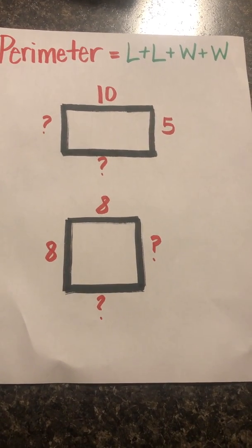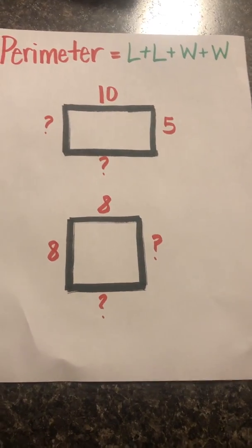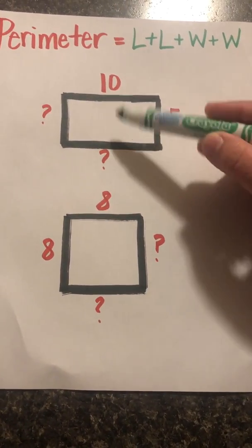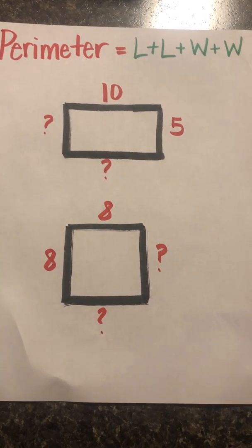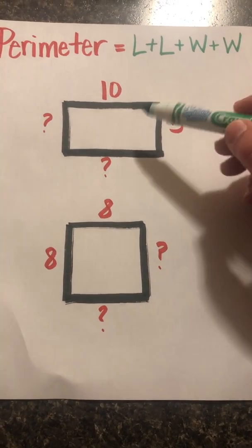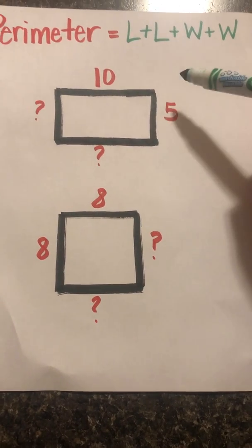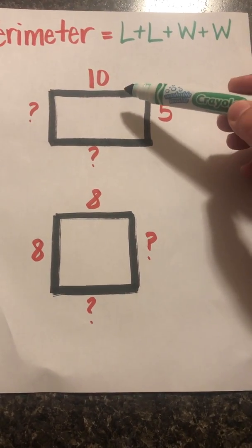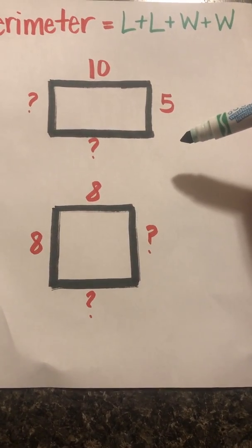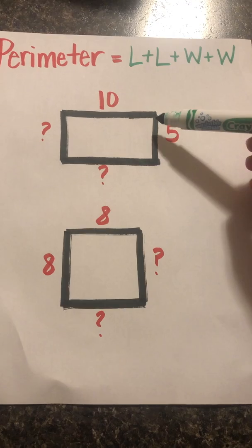So if you'll look right here, we have a rectangle. Let's just kind of review what we know about a rectangle. A rectangle has four straight sides. We also know that opposite sides are equal to each other. So today let's look at this rectangle and try to figure out what are these missing sides.